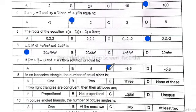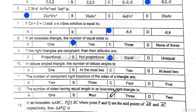Number 8: In an isosceles triangle, the number of equal sides is 2. Option B is correct. Number 9: If two right triangles are congruent, then their altitudes are equal. Option C is correct. Number 10: In an obtuse angle triangle, the number of obtuse angles is 1. Option A is correct.